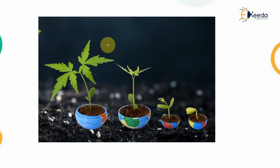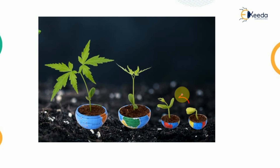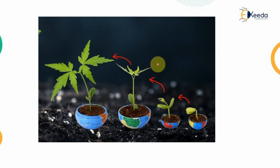When we talk about irrigation, the first thing that comes to our mind is the plants or the crops. This is the phase-wise growth cycle of any crop that we grow.